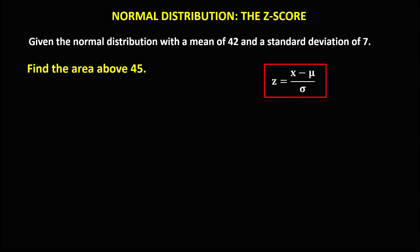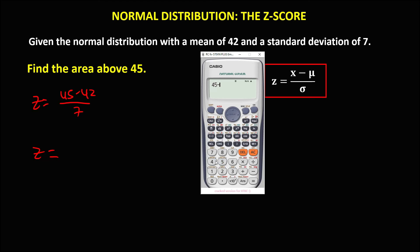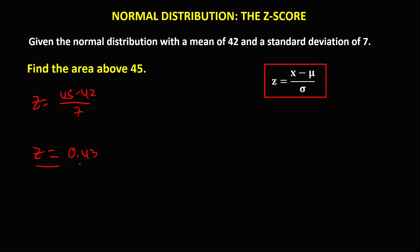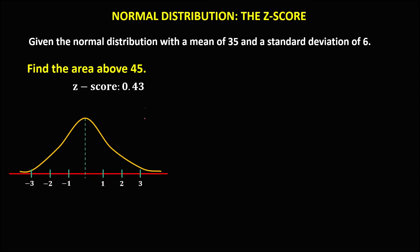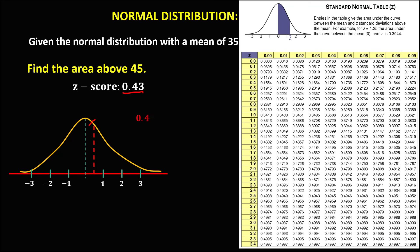For the last given, we need the area above 45. Z equals 45 minus 42, divided by 7, which gives 0.43. To find the area above 0.43, in a normal curve this is positive 0.43. Look up row 0.4, column 0.03. The area is 0.1664.